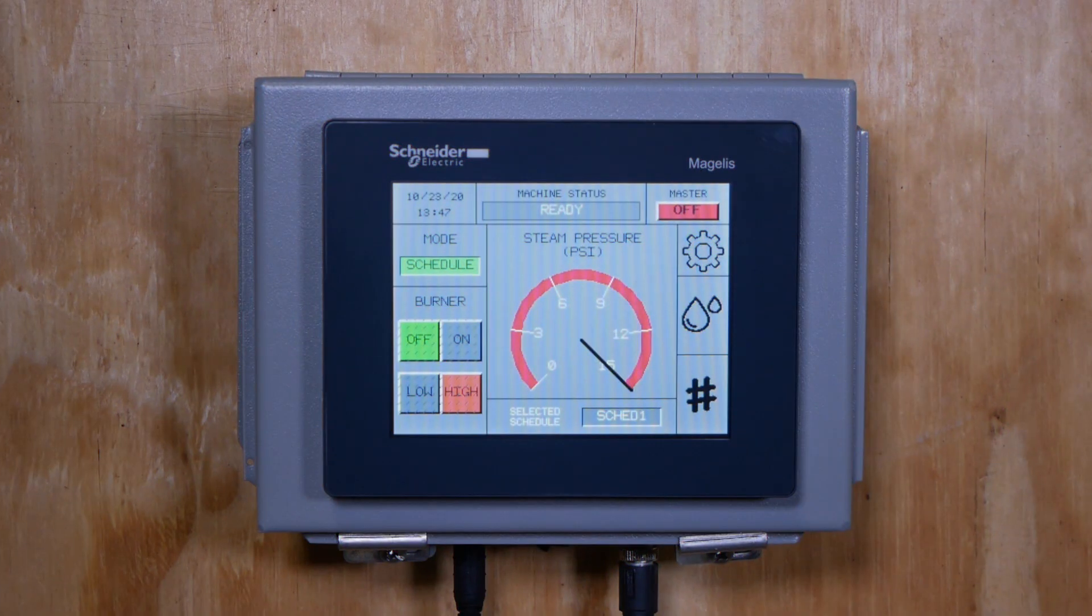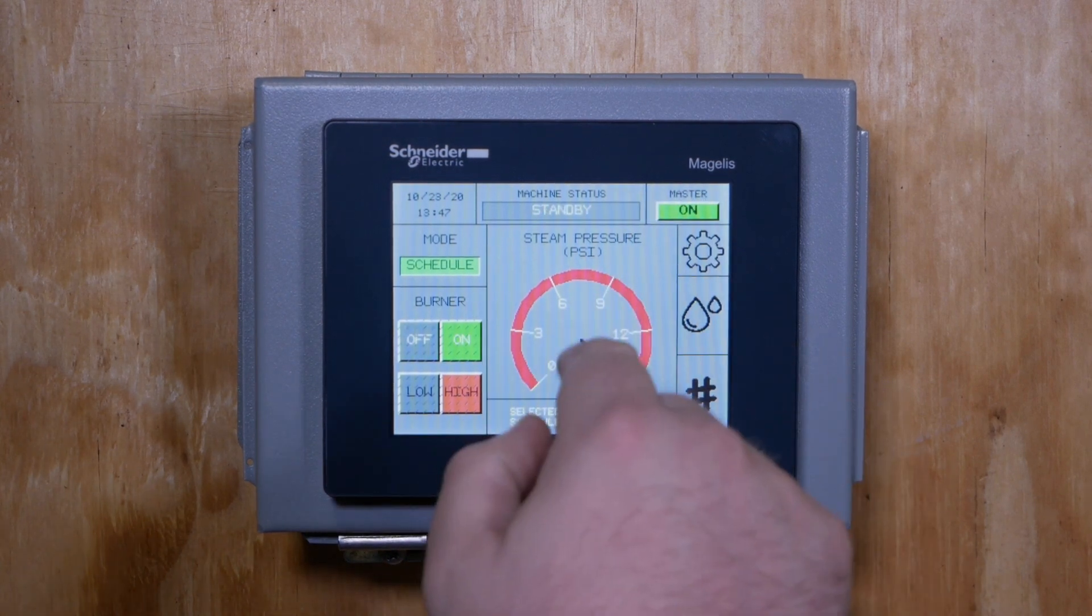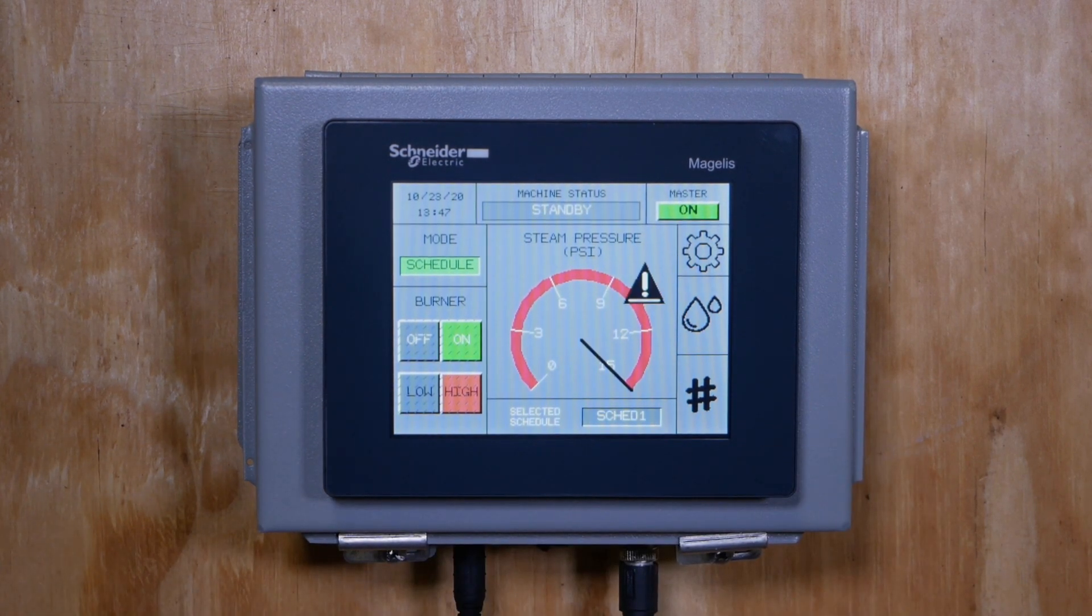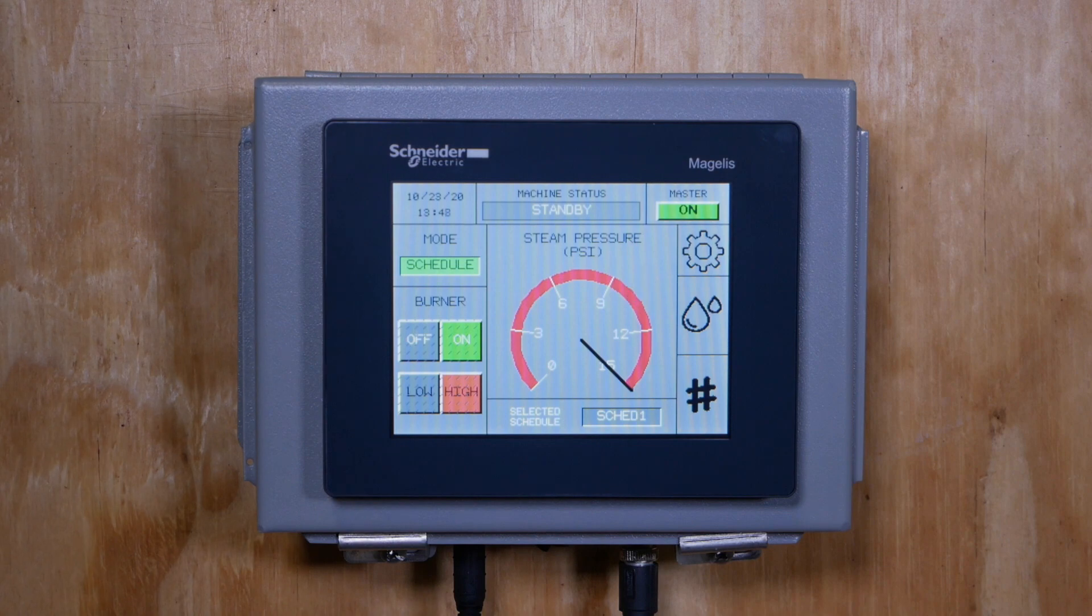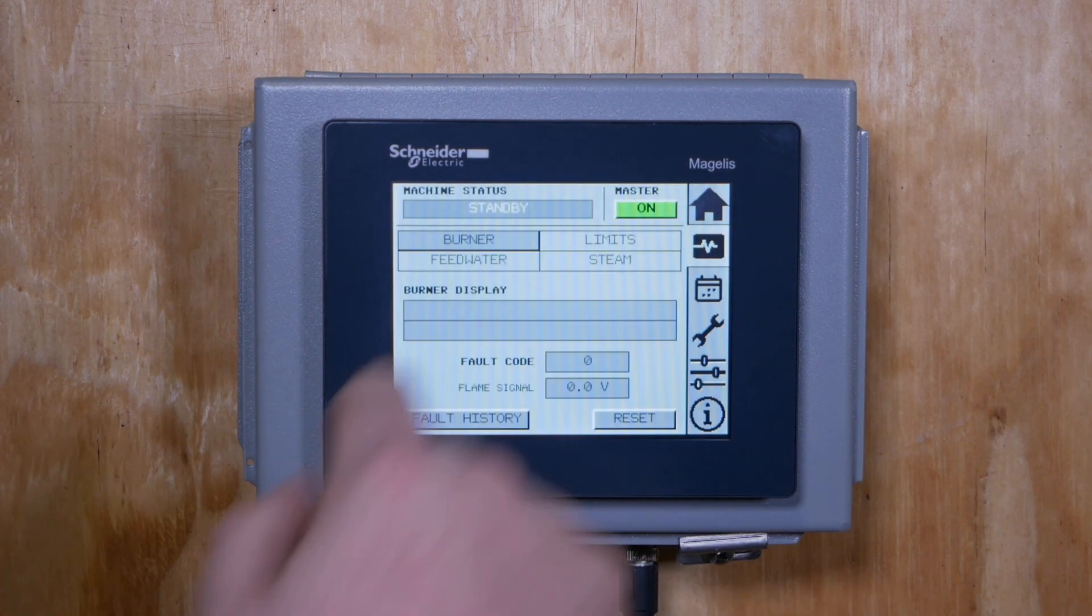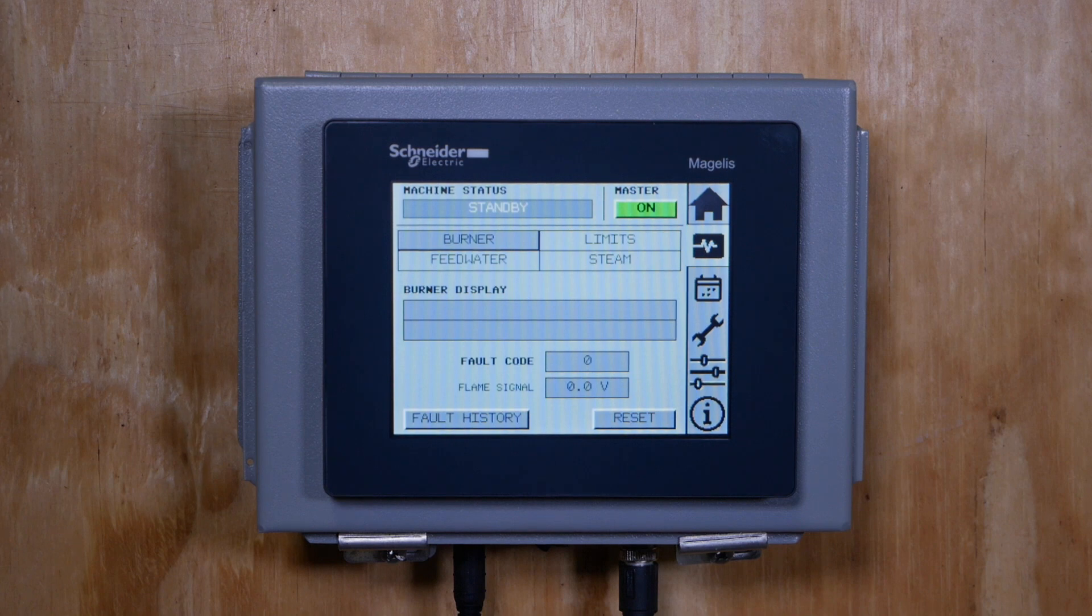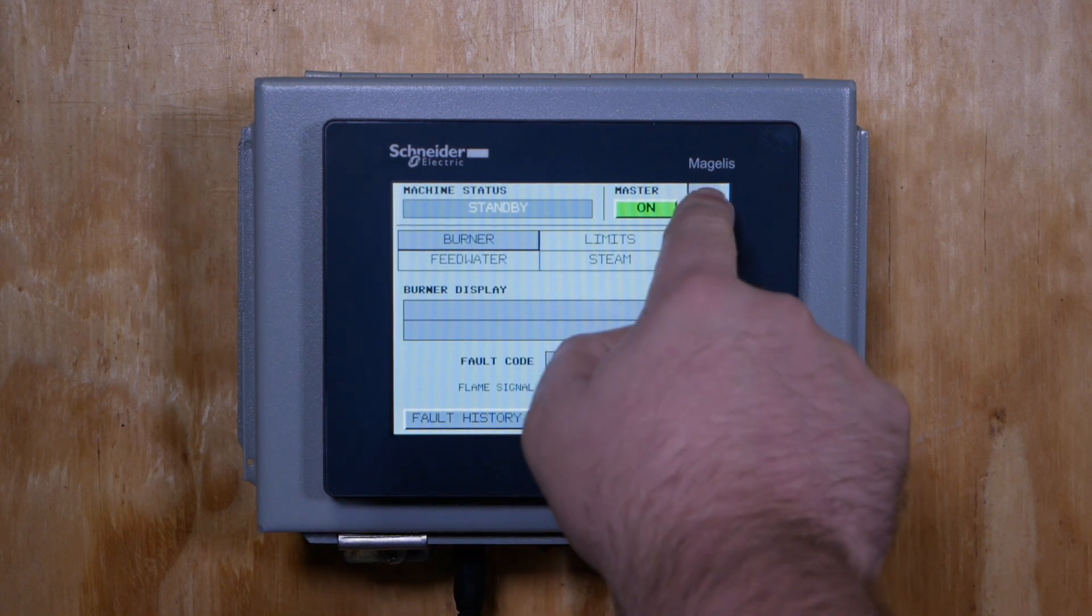The most important control on the touchscreen is the master on-off button in the corner. This turns the machine on and off. The middle portion of the screen shows the machine's status. If you tap it, it takes you to the diagnostics menu, but we will cover that a little bit more later.